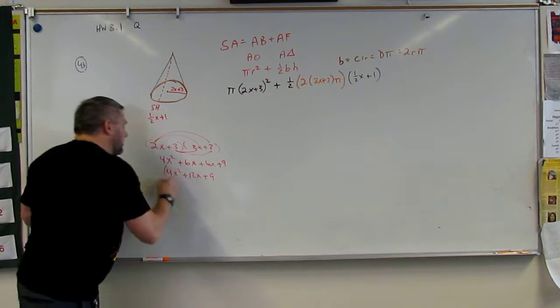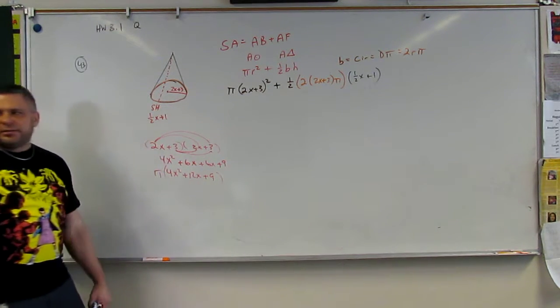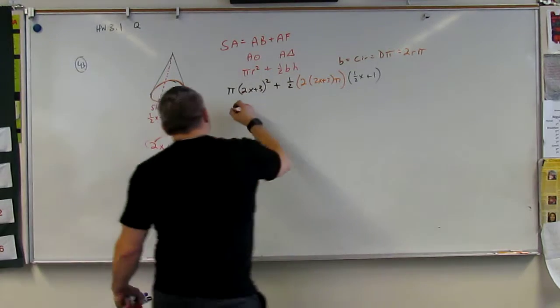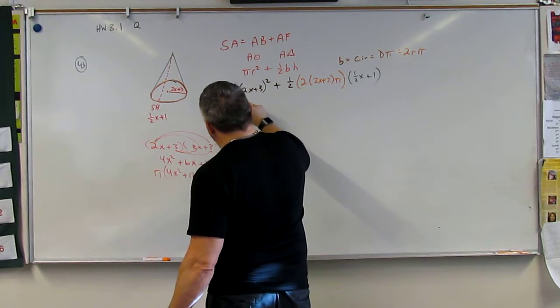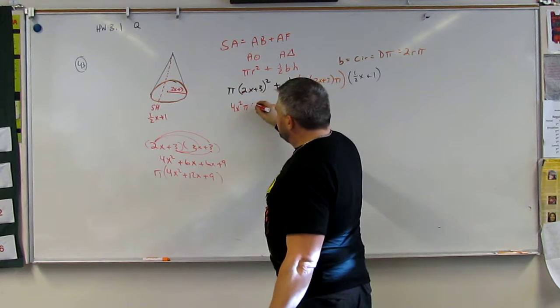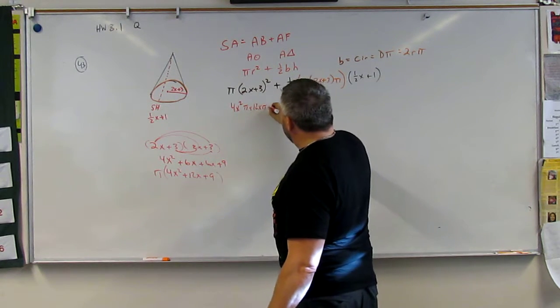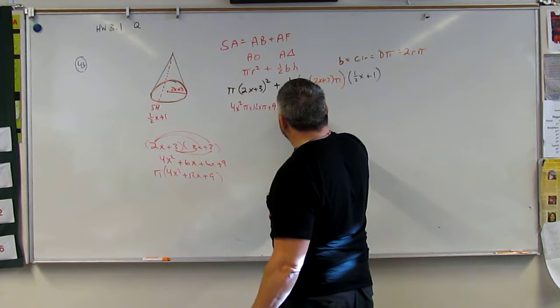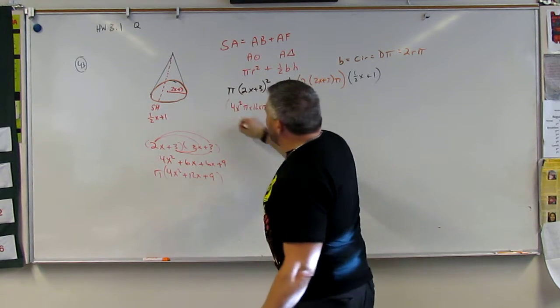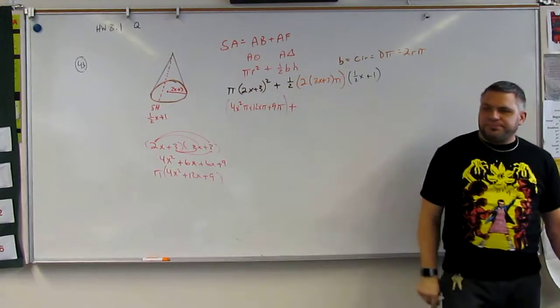And so what we get here is 4x squared plus 12x plus 9. And then all of that is multiplied by pi. So then we get 4x squared pi plus 12x pi plus 9 pi. And then we're going to add that equation to that other big one.